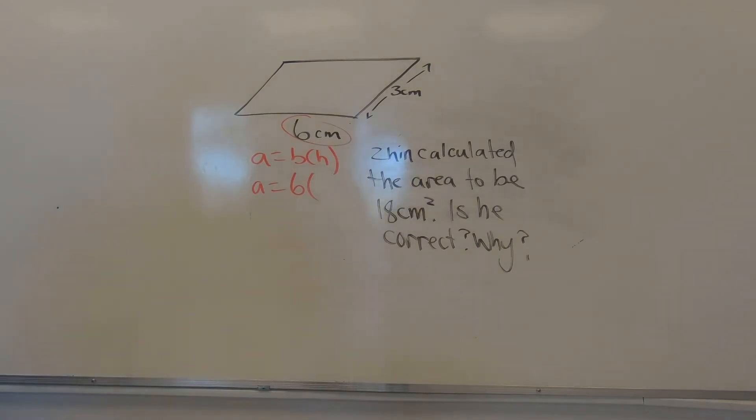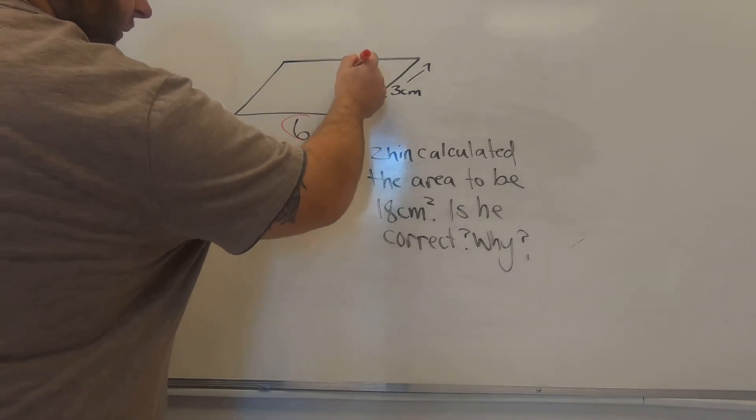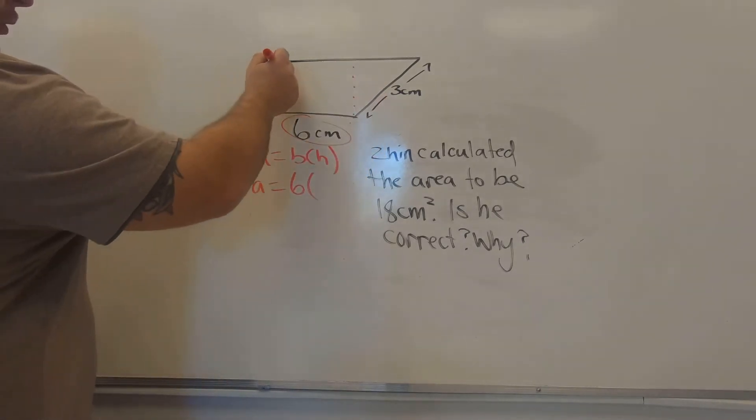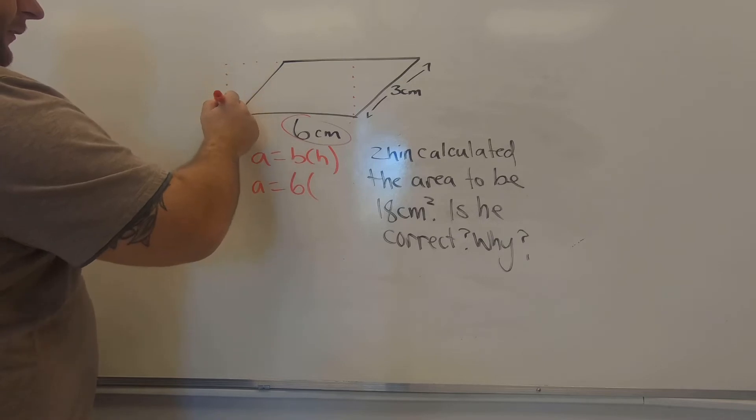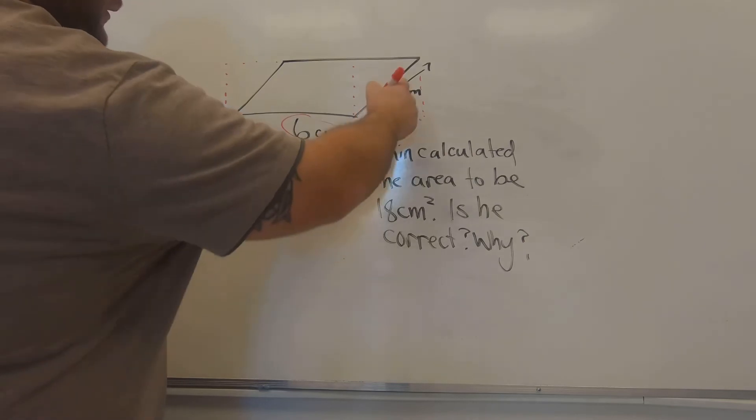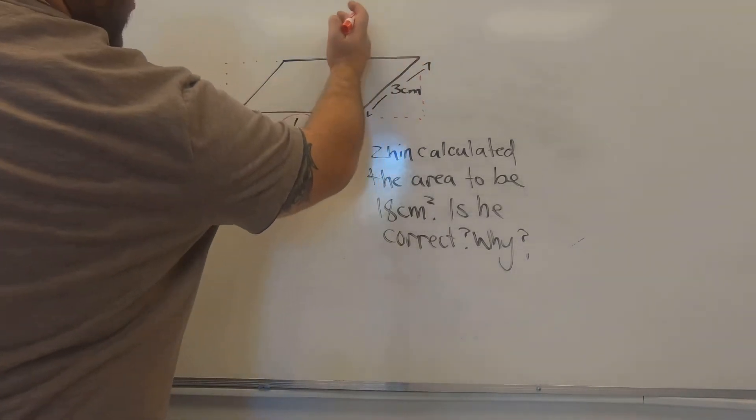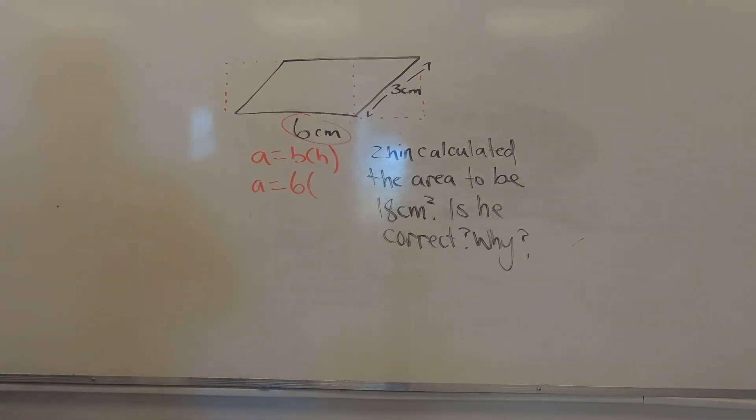The height is the distance from the base to the other base. This would be the height. Or that could be the height. Or this would be the height. But this is the side length. The side length is actually slightly longer than the height. So if we measured, if we took this 3 centimeters and we shifted it this way, it's going to actually be a little bit bigger than the height.